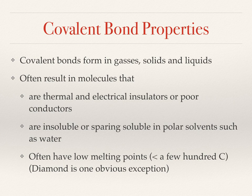Compounds with covalent bonds can be gases, solids, or liquids. They're usually insulators or poor thermal conductors - that is, they resist the flow of heat and electricity. They're typically not soluble in polar solvents, for example water.